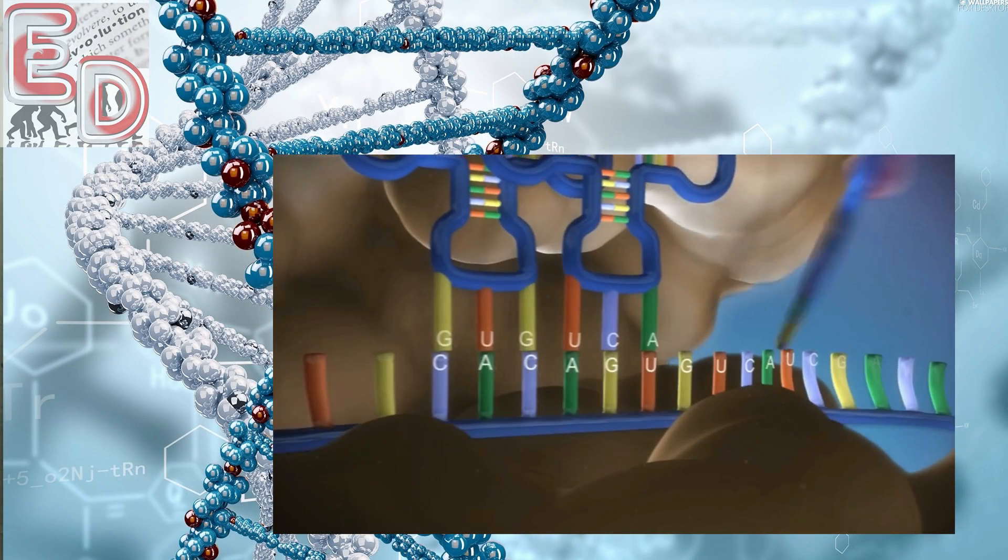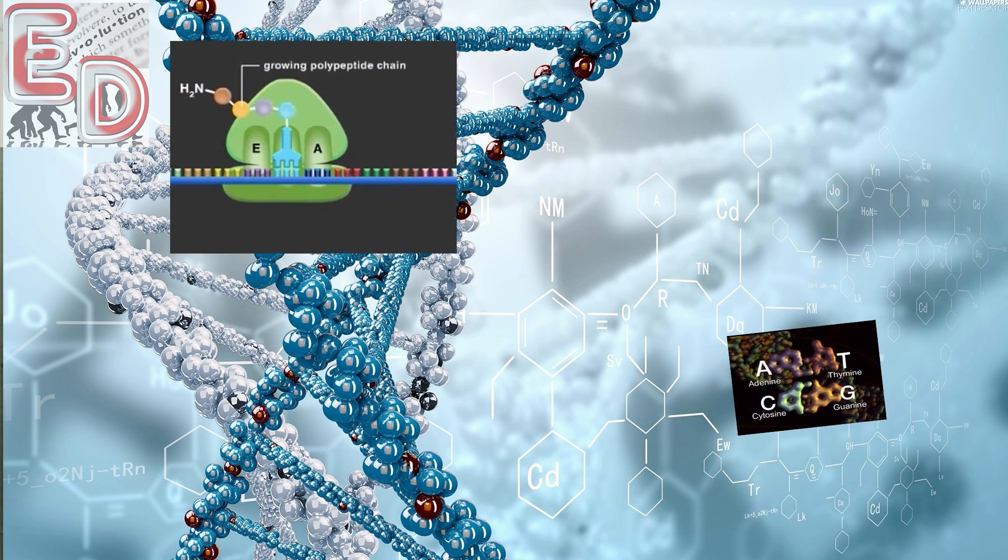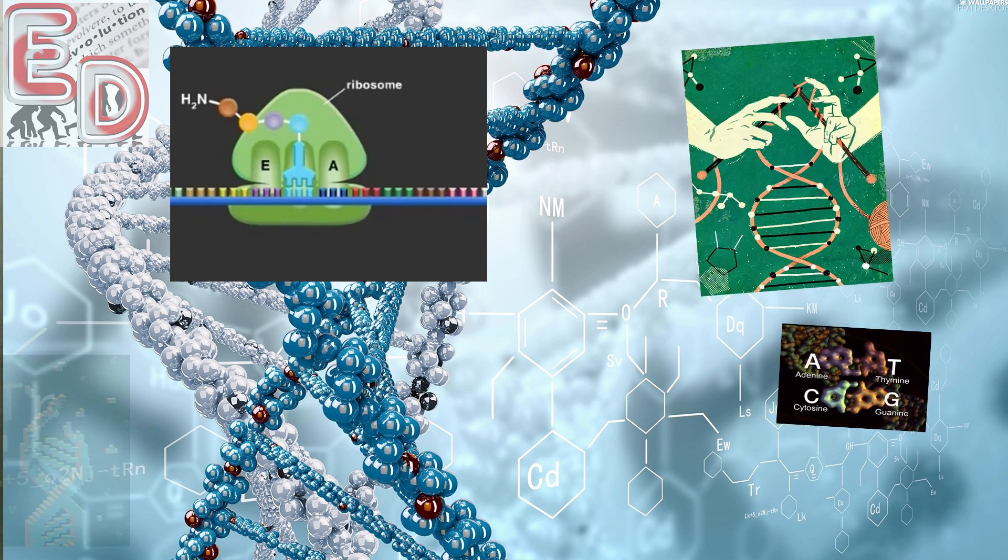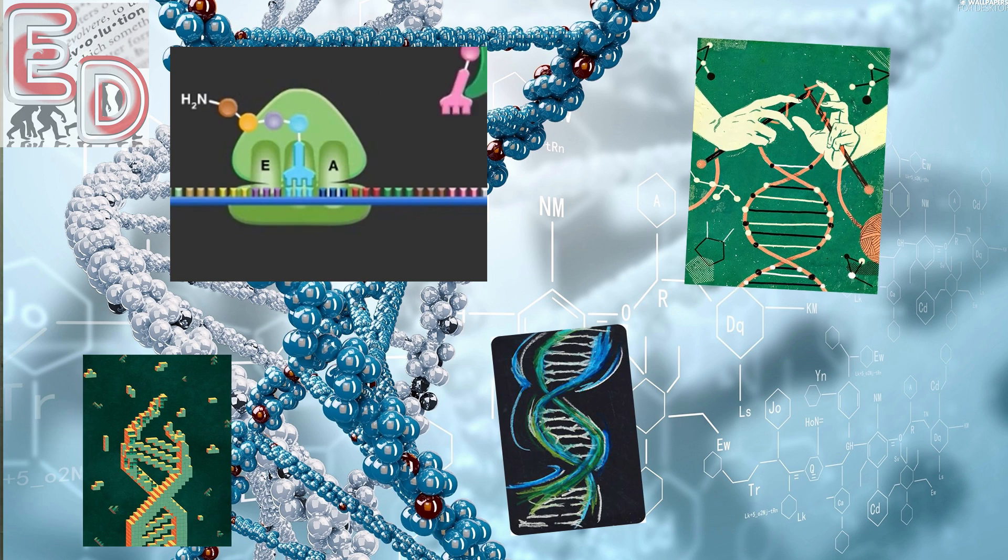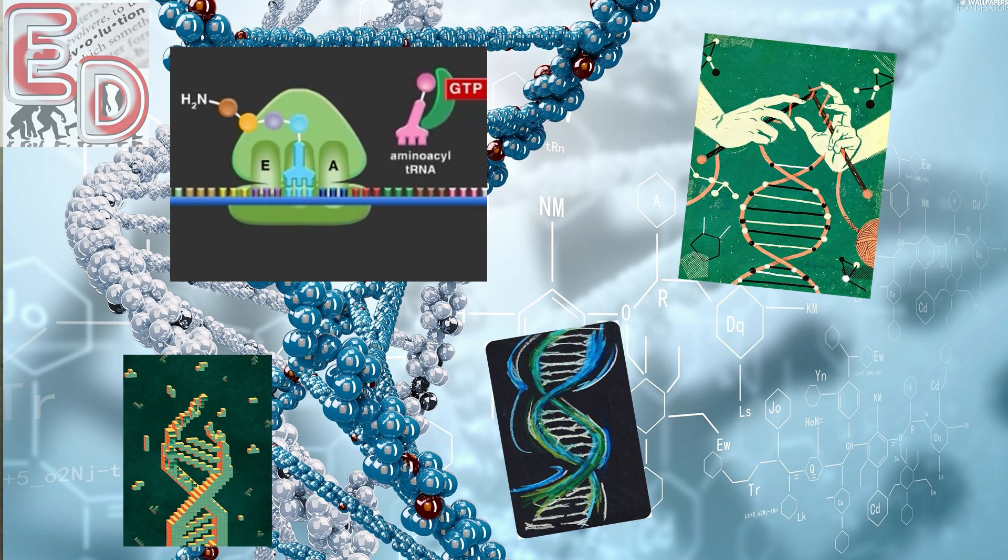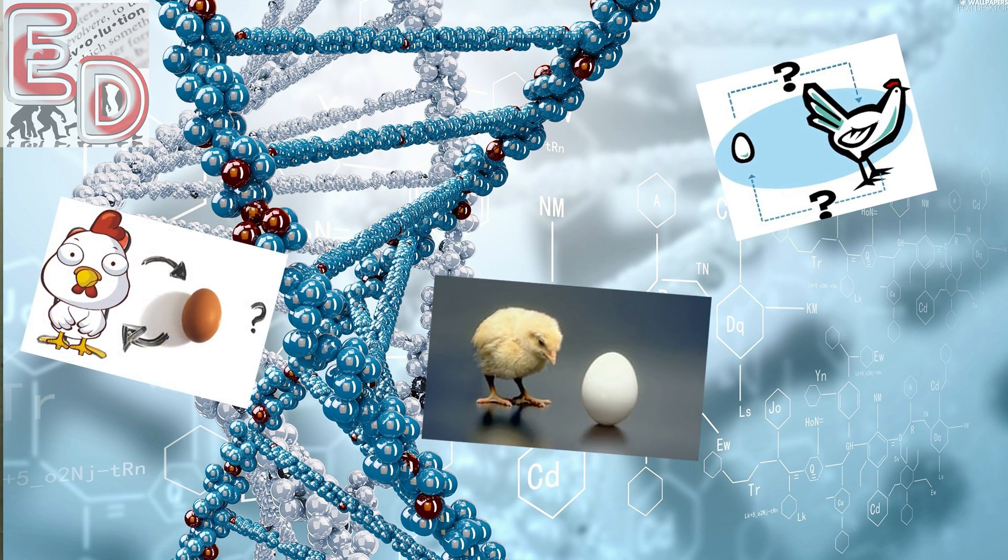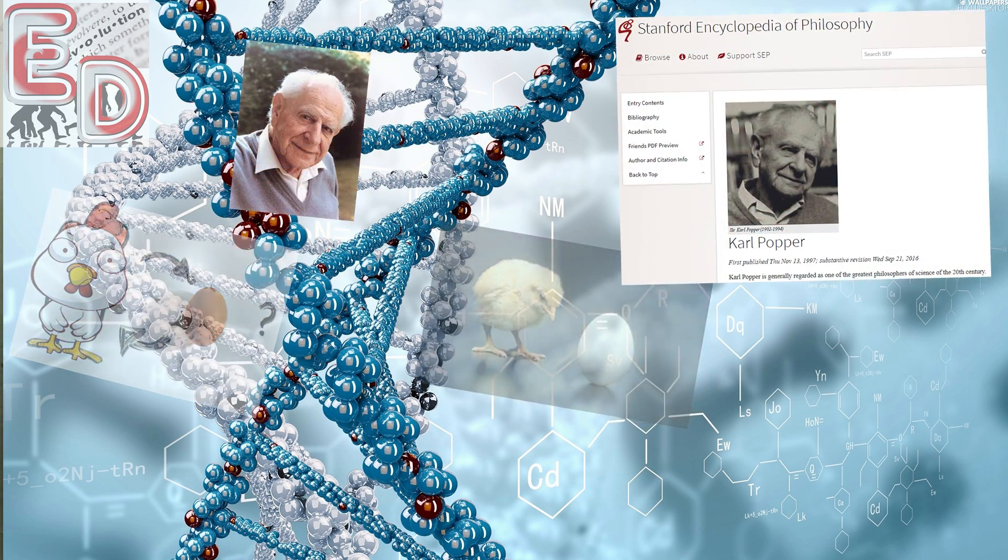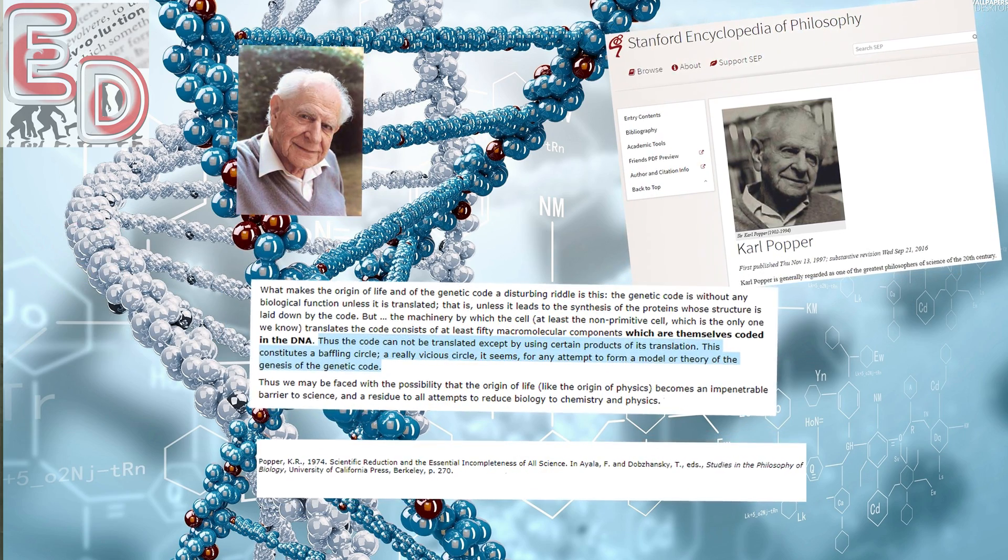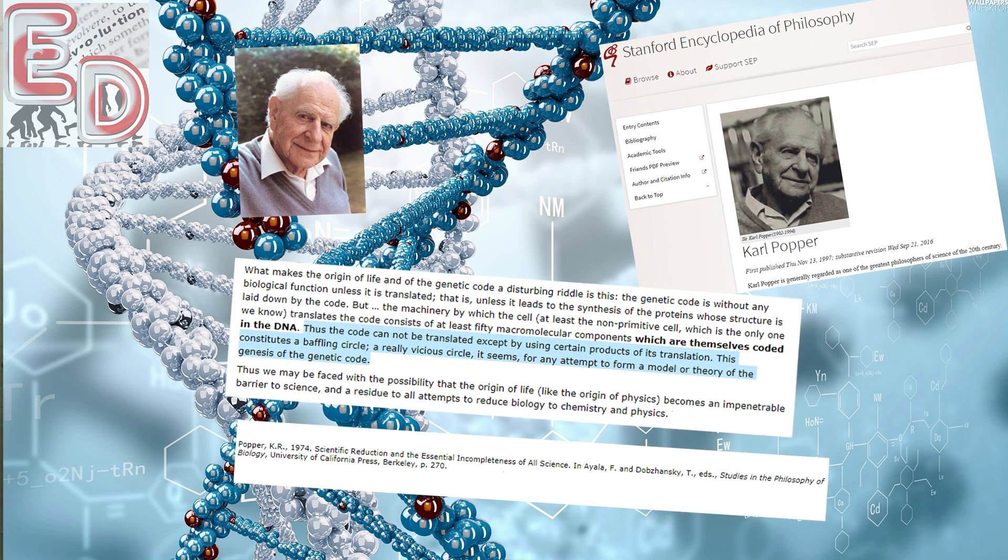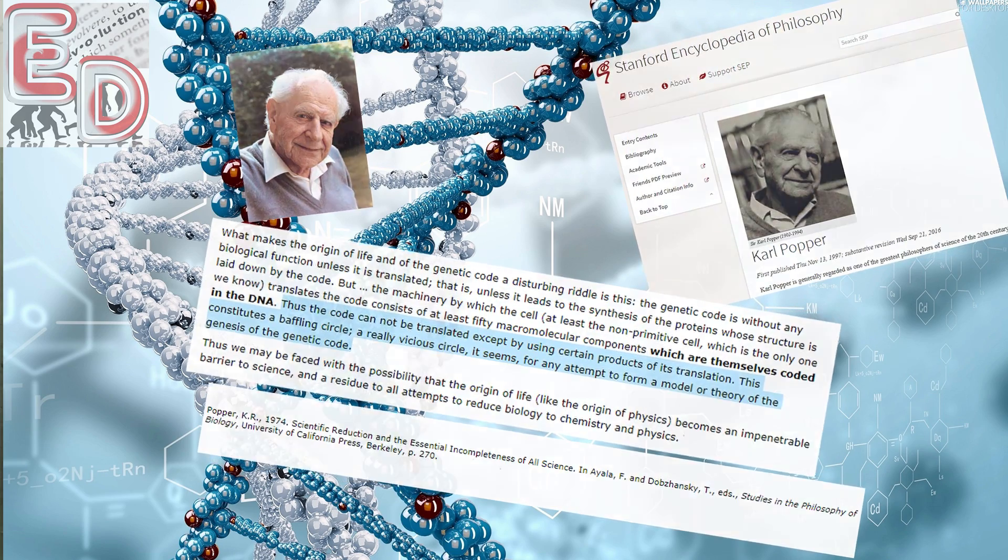That means DNA is meaningless without DNA, and that DNA can't exist without DNA. From an evolutionary standpoint, it is impossible to imagine how random processes could evolve not only a functional language capable of conveying complex biological blueprints, but also the directions for decoding it, all at the same time. It truly is a chicken-and-egg problem. Sir Karl Popper describes it as follows: Thus, the code cannot be translated except by using certain products of its translation. This constitutes a baffling circle, a really vicious circle, it seems, for any attempt to form a model or theory of the genesis of the genetic code.